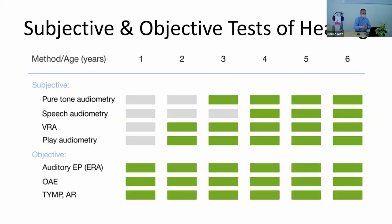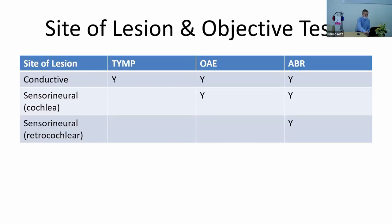About the distinction between subjective and objective tests of hearing: subjective tests require the attention of the patient. For example, in pure tone audiometry, the patient must be awake, understand the instructions, and react accordingly — for example, click a button. Objective tests do not require any cooperation from the patient at all, so the patient could even be a sleeping baby.